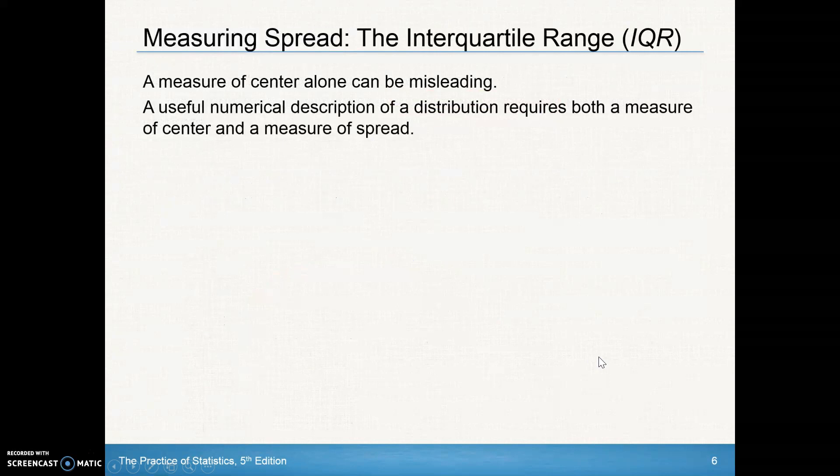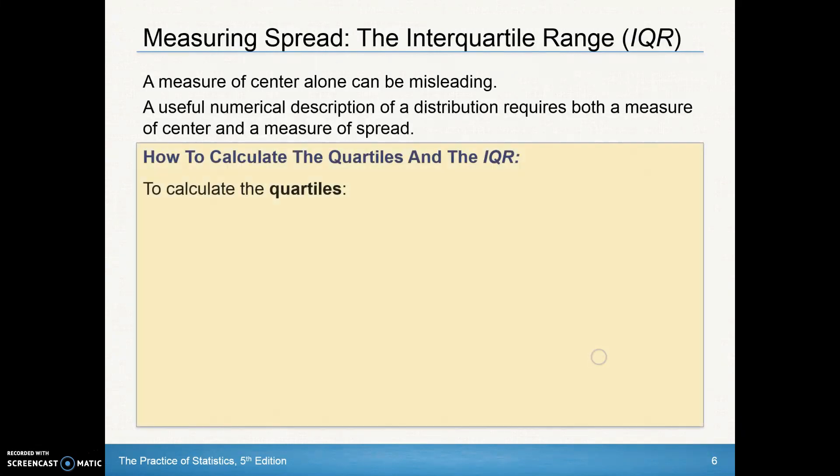Measuring center alone can be misleading. You want to be concerned about how spread out the data is. We're going to look at quartiles and the IQR. Quartiles relate to the word quarter, which is 25 cents or 25% of the way to the final value.